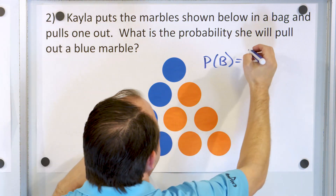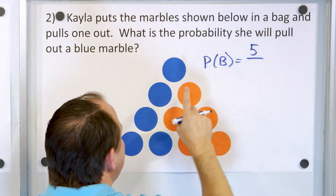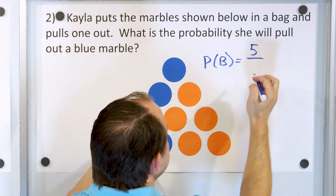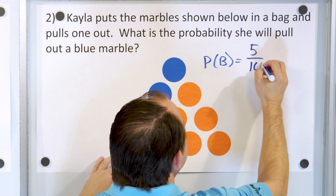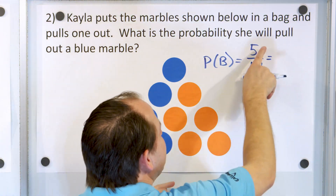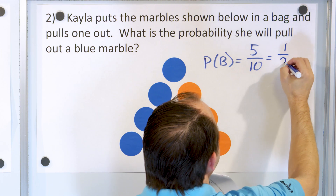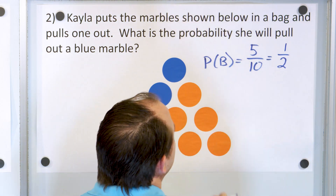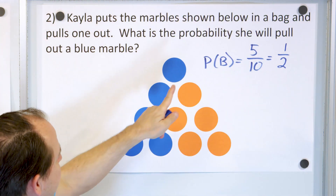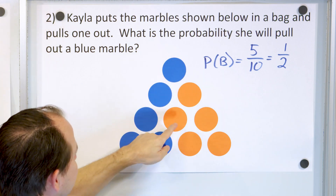There are five blue marbles, and there are ten total outcomes. So the probability is five-tenths. Five-tenths divided by five works out to one-half. So that's the probability of pulling out a blue marble.